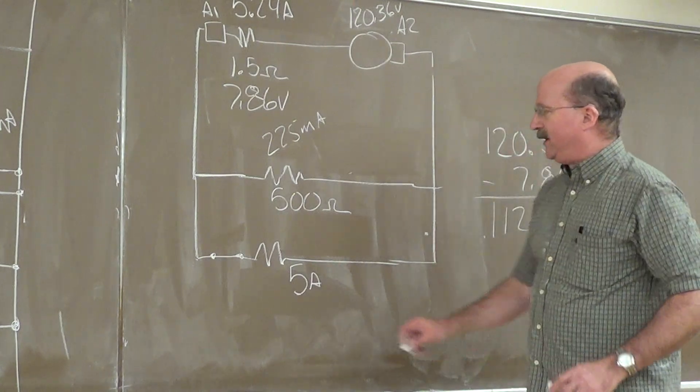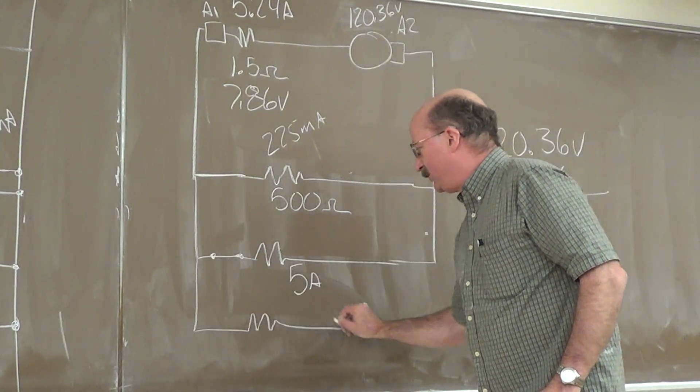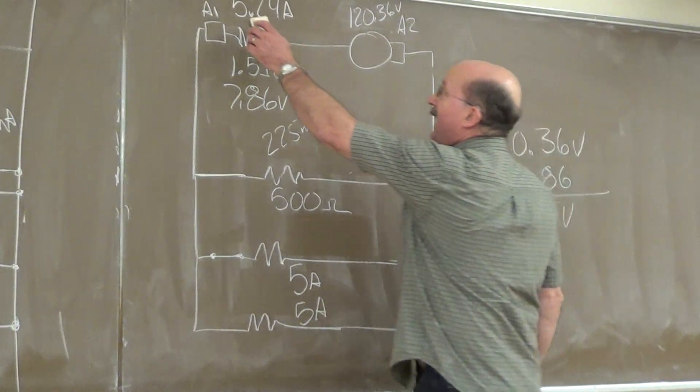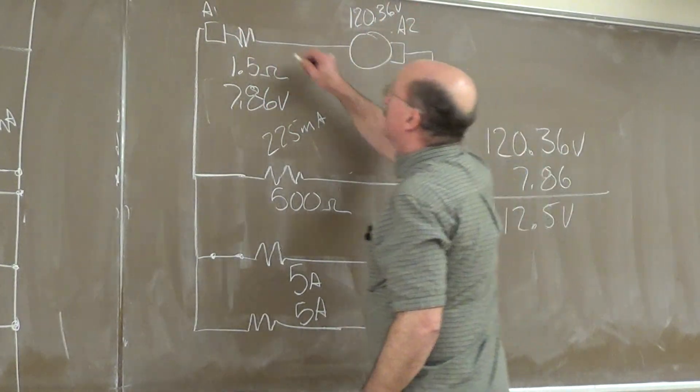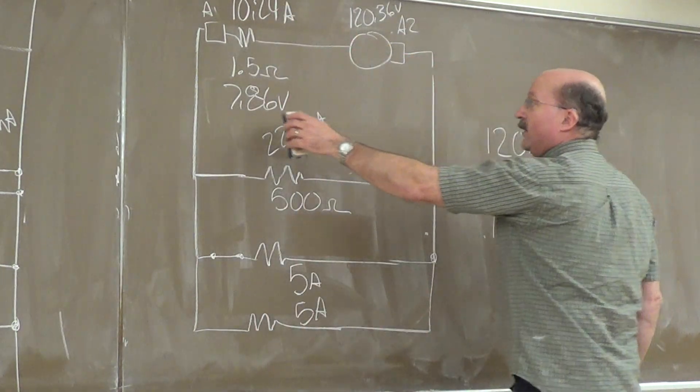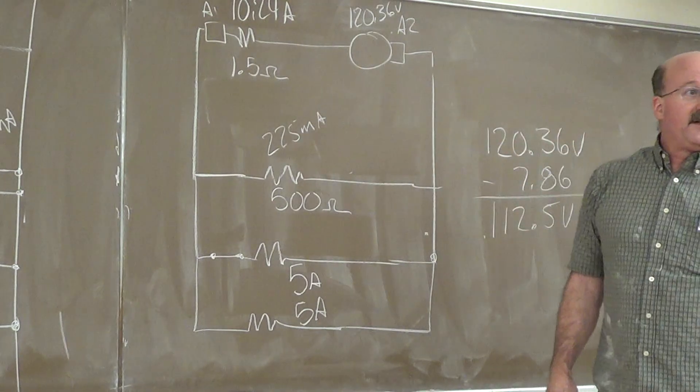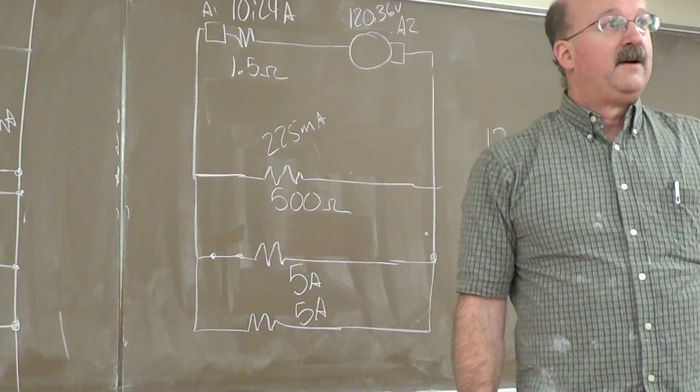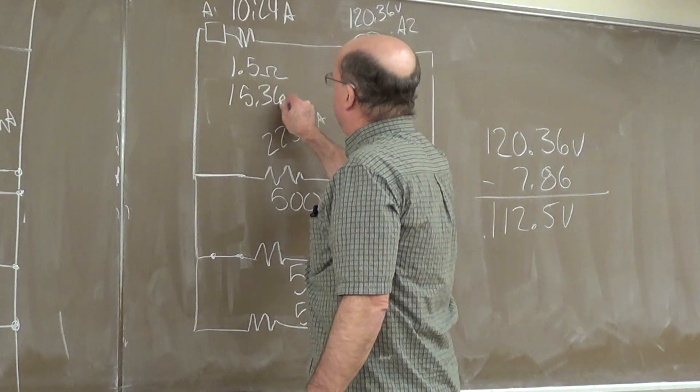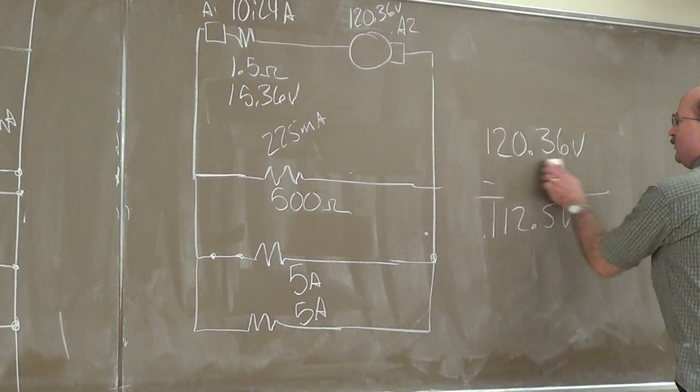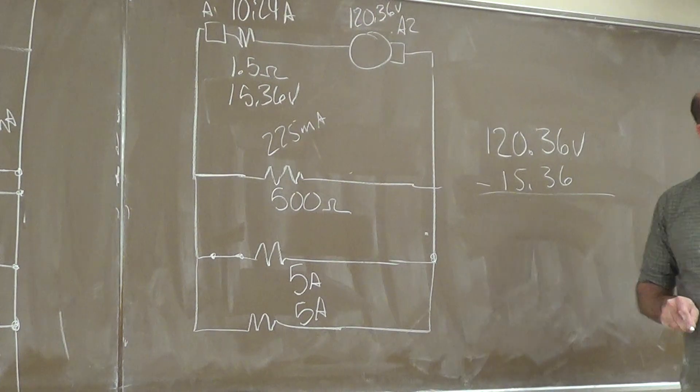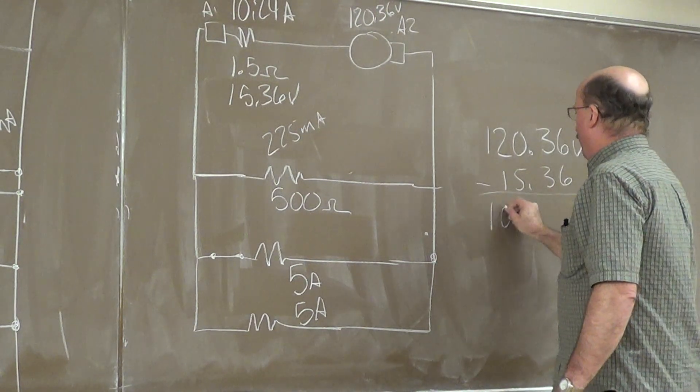But look at this very simply. If we come over here, now we increase this to another 5 amps here. Where are we at here? 10.24. 10.24 amps. 10.24 times 1.5 gets us how many volts? 15.36. 15.36. 120.36 minus 15.36. Oh, that's nice, isn't it? 105 volts.